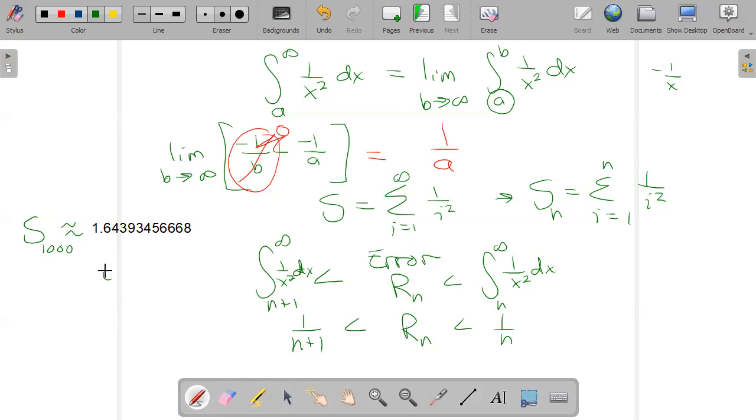My error in this approximation right here, my remainder, what I'm missing, is somewhere between one over a thousand and one over one thousand and one. So that means I am confident about one, two, three places here, but not the other ones.